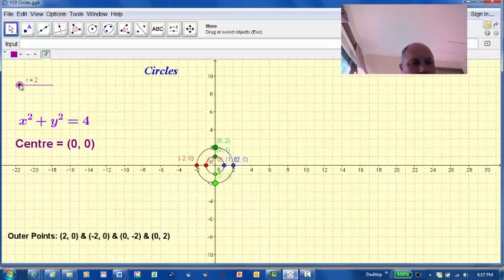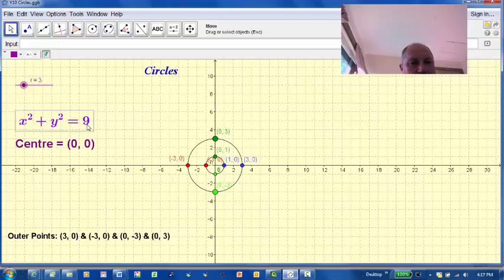So then we will draw the next one on our notes: x squared plus y squared equals 9. So you need to change that value of the radius to 3. The 3 squared being 9. So x squared plus y squared equals the radius squared.